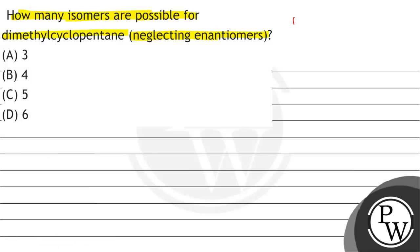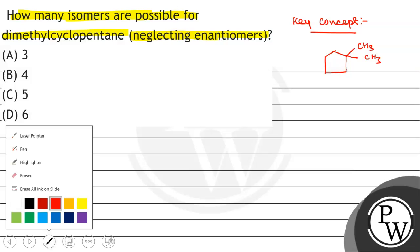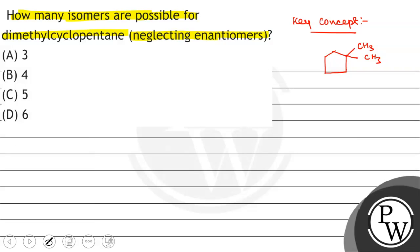First of all, we will see what the key concept within the question is. The key concept is dimethyl cyclopentane — this is what dimethyl cyclopentane looks like. Now we will see how many isomers are possible for dimethyl cyclopentane.